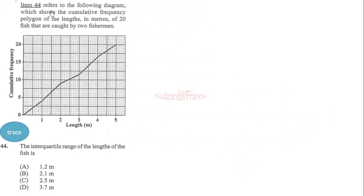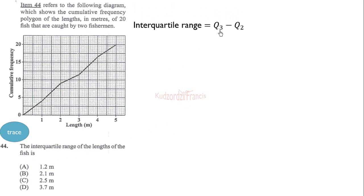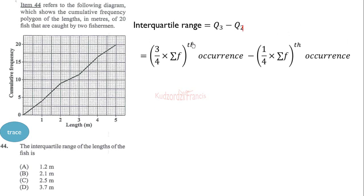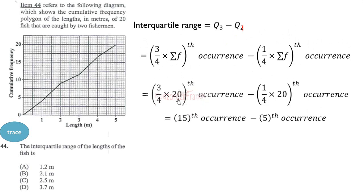Question 44 refers to a diagram showing a cumulative frequency polygon of lengths in meters of fish caught by two fishermen. We need the interquartile range, which is the third quartile minus the first quartile. Three-quarters of the total frequency gives the position of Q3, and one-quarter gives the position of Q1. The total frequency is 20, so Q3 corresponds to the 15th occurrence and Q1 corresponds to the 5th occurrence.